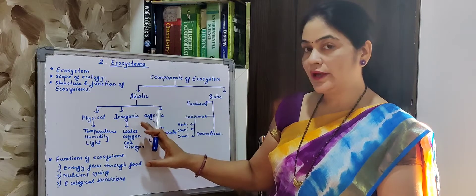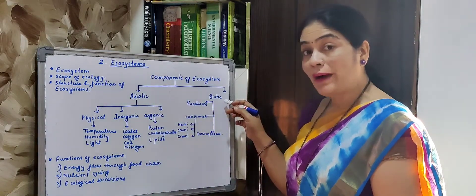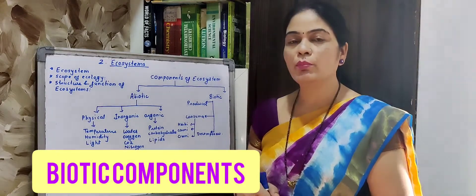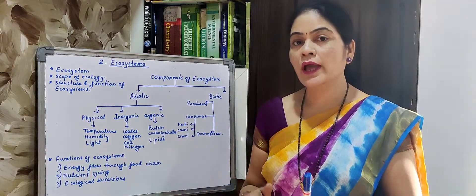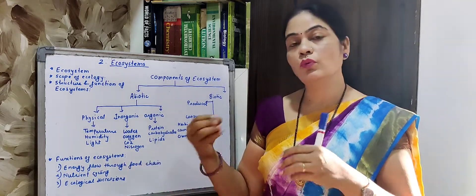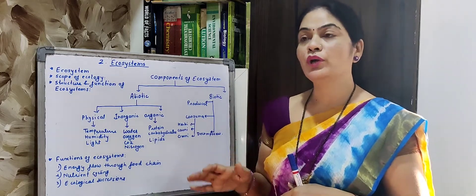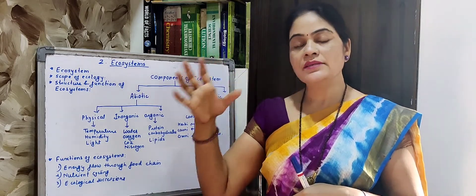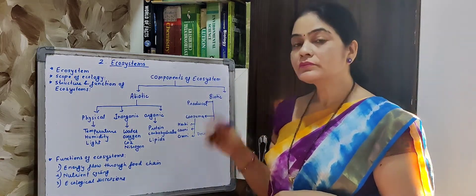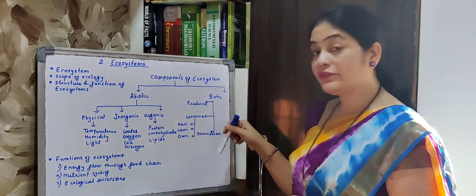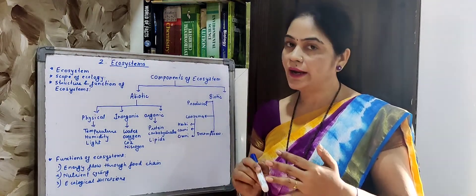Let's now start with the main topic, that is the biotic component. Biotic components mean all living components — from a small ant to a big elephant, all are included in biotic components. These biotic components are further divided into three categories: producer, consumer, and decomposer.